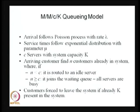Now I am moving into the MMC-K queuing model. The change here is that instead of one server in the M/M/1 model, you have more than one server C, and you have a finite capacity, that is capital K — the capacity of the system.